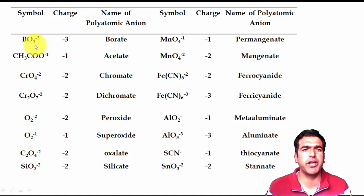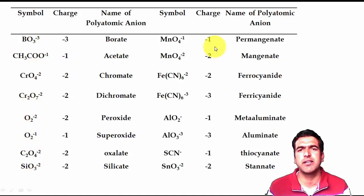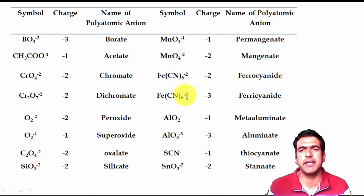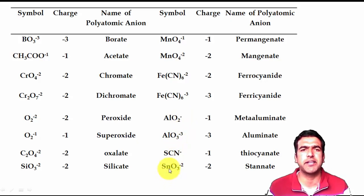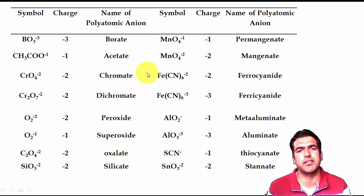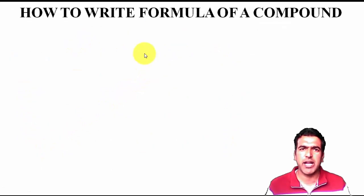In addition to these rules, there is a list of anions you must memorize. This includes: borate, acetate, chromate, dichromate, peroxide, superoxide, oxalate, silicate, permanganate, manganate, ferrocyanide, ferricyanide, metaaluminate, aluminate, thiocyanate, and stannate. You must also remember their formulas and charges.